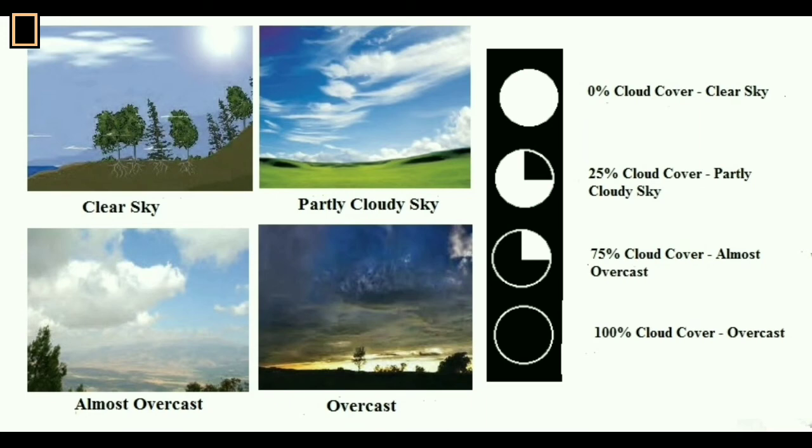0% cloud cover suggests clear sky. 25% cloud cover represents partly cloudy sky. 75% cloud cover suggests almost overcast and 100% cloud cover represents full overcast.